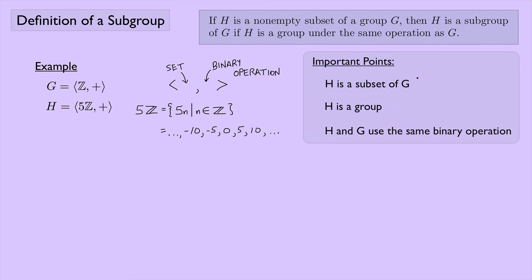First, H is a non-empty subset of G. It's definitely non-empty, and yes, it is a subset of the integers — so that first point holds. Second, H is a group: we've shown before that 5Z under addition is a group, so H itself is a group. Third, H and G use the same binary operation, which is addition. Therefore, H is a subgroup of G.